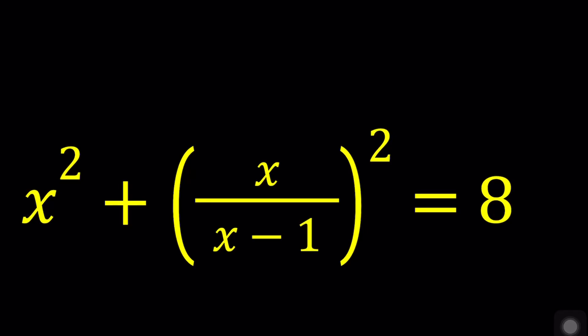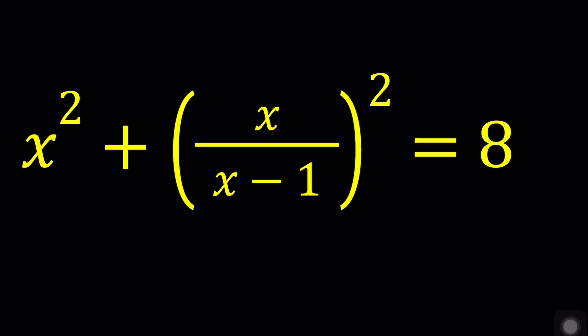In this video, we're going to be solving a rational equation. We have x squared plus the quantity x over x minus 1 squared equals 8, and we're going to be solving for x values. I'll be presenting two methods, and let's start with the first one.